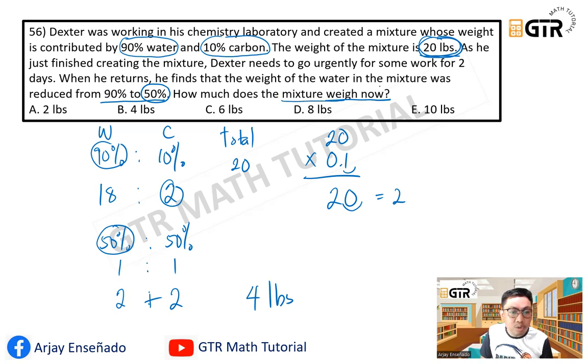How much does the mixture weigh now? So therefore, that is 4 pounds, which is letter B, 4 pounds.